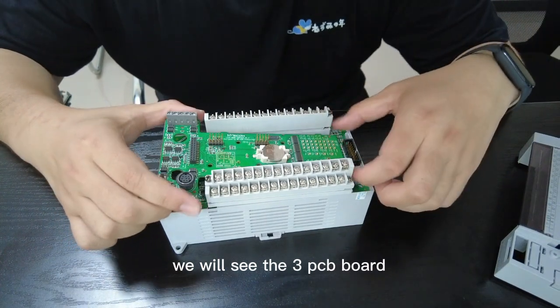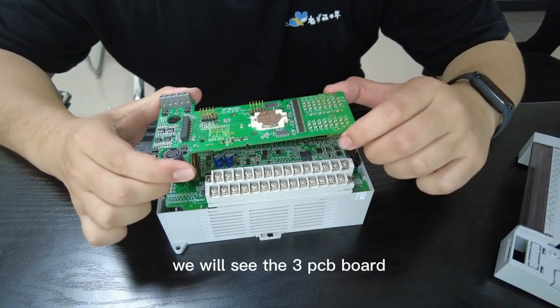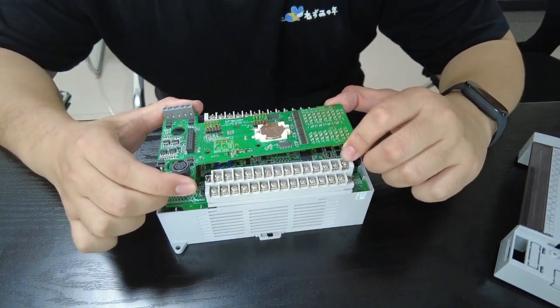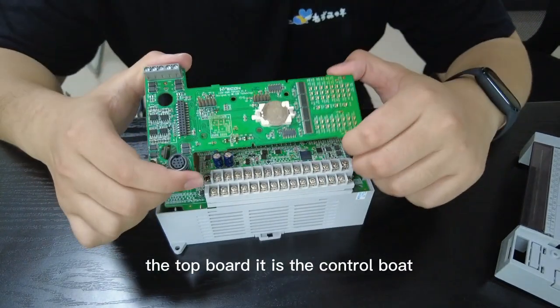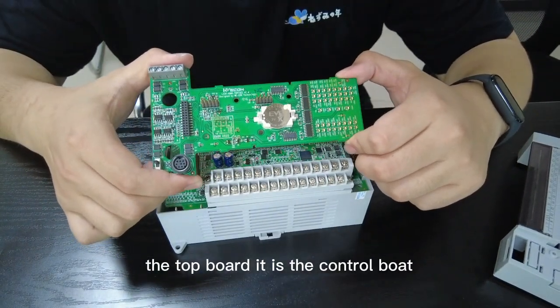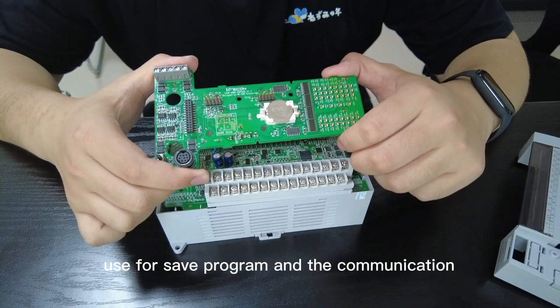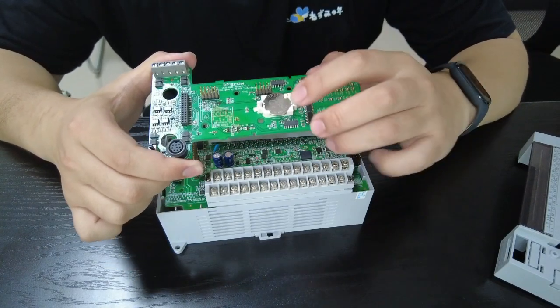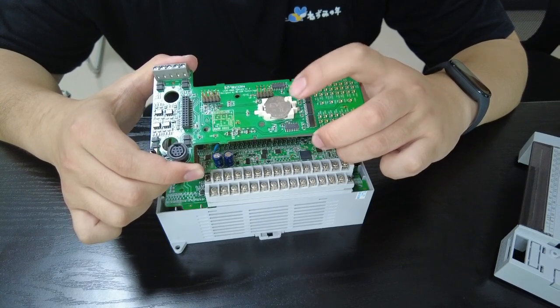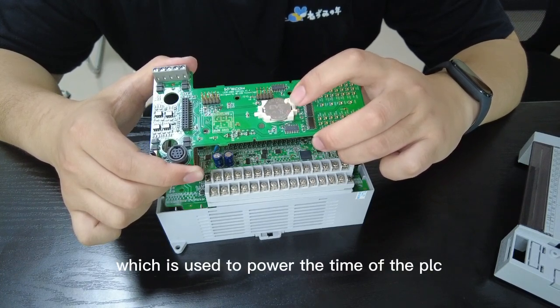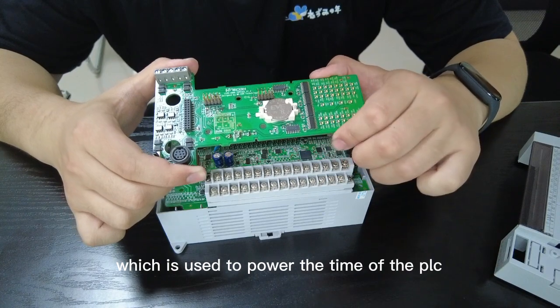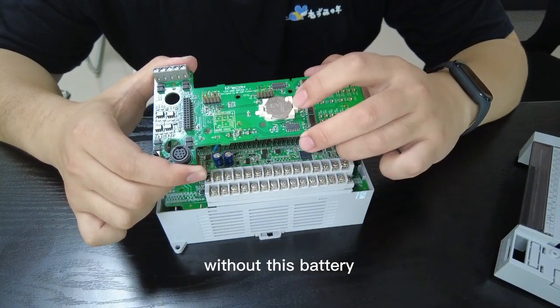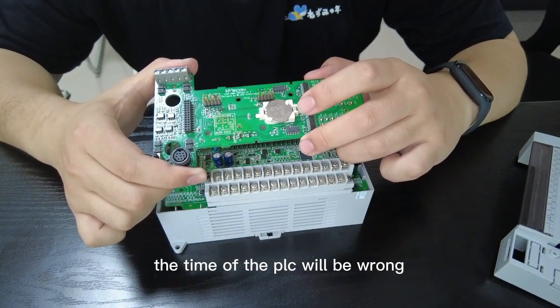Take out the shell and we will see the three PCB boards in the PLC. The top board is the control board. It goes for program and communication. And this is the battery which is used to power the time of the PLC. Without this battery, the time of the PLC will be wrong.